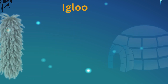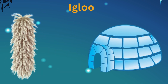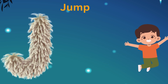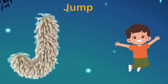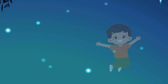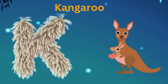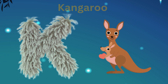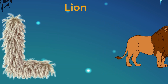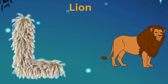I is for Igloo, I-I-Igloo. J is for Jump, J-J-Jump. K is for Kite, K-K-Kite. L is for Lion, L-L-Lion.